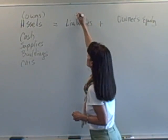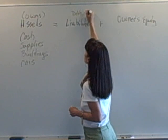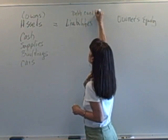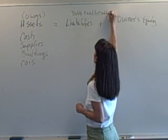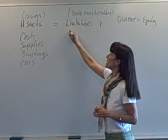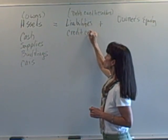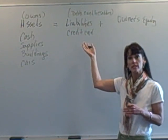Now, liabilities are debts. These are things that the business owes to creditors. For example, when we use a credit card, that would be a debt. If a business uses a credit card or charges something, that's considered a liability.